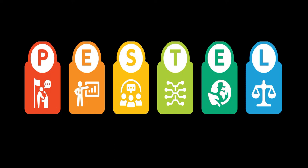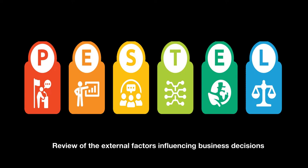Hello and welcome back everyone. In this video we're going to learn how a business uses the PESTLE analysis within the strategic management process, specifically at the strategic analysis stage. PESTLE, similar to SWOT, is an acronym where each letter stands for something in particular. PESTLE analysis is a review of all the external factors influencing business decisions — which all 37 videos in the first chapter discussed.